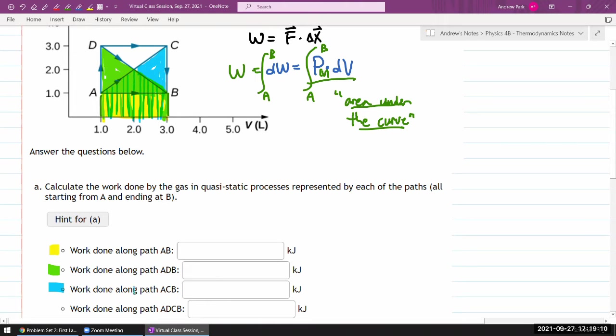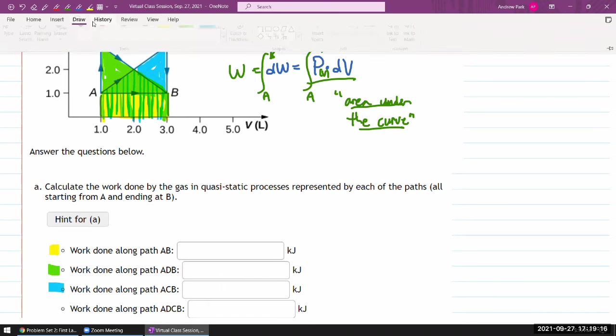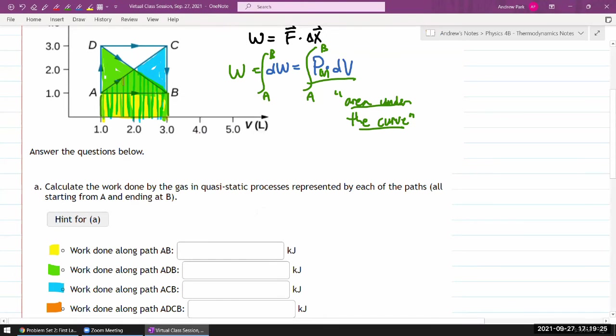And work done along ADCB. Okay, that's this rectangle thing. Let me color that. So again, I'm only going to color the portion that I haven't colored before, but it also includes everything under this.